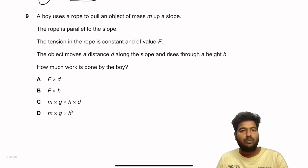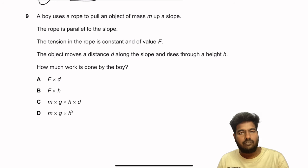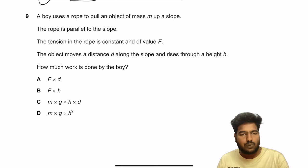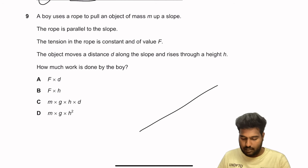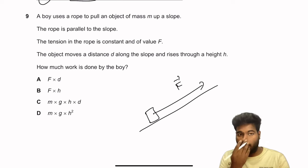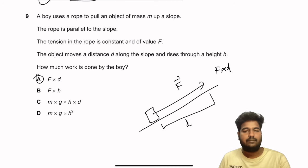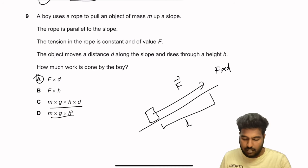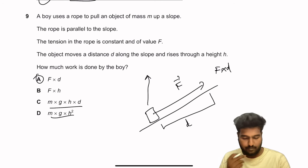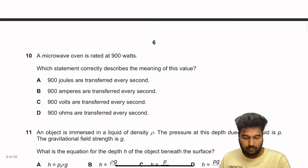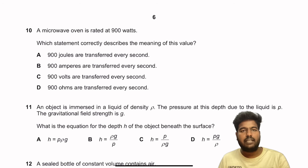Question 9: A boy uses a rope to pull an object of mass m up a slope. The rope is parallel to the slope, tension is constant at force F, and the object moves distance d along the slope, rising height h. Work done by the boy equals force times distance in the direction of the force, which is F × d. So A is the right answer.